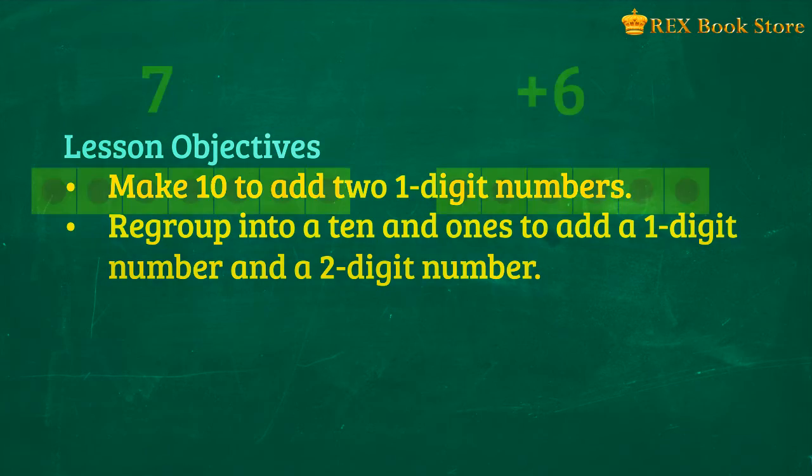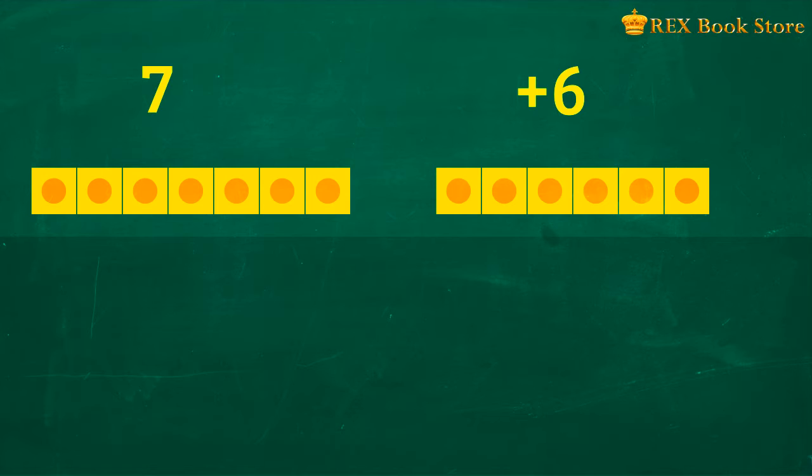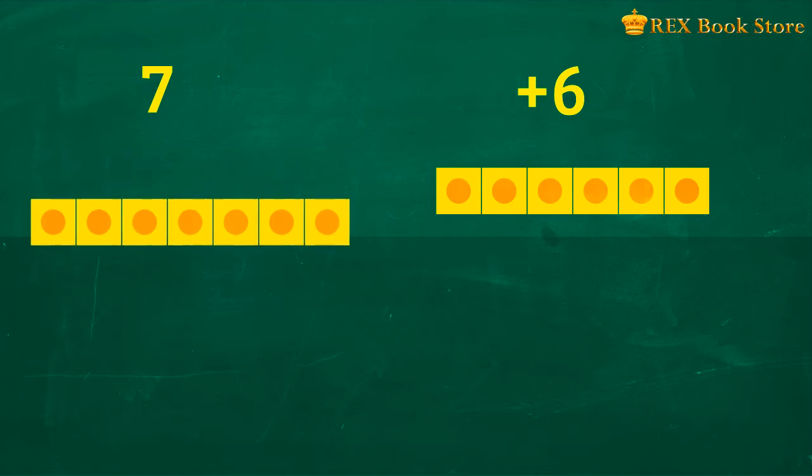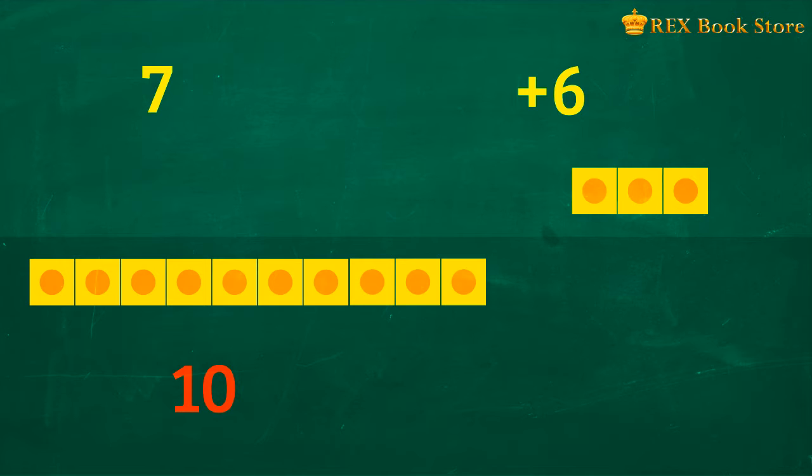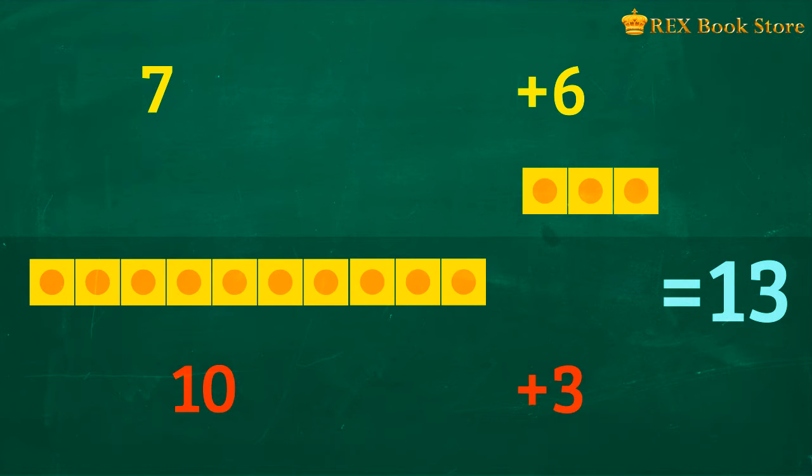How do we add 7 and 6? We can make 10 to add the two numbers. Let's take 7 of these units and 3 of these to make a group of 10. How many are left? That's right! 7 plus 6 is equal to 10 plus 3, which is equal to 13.